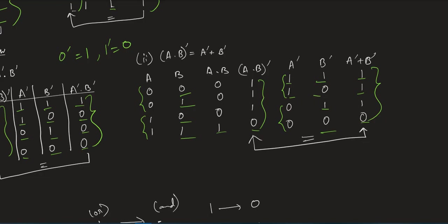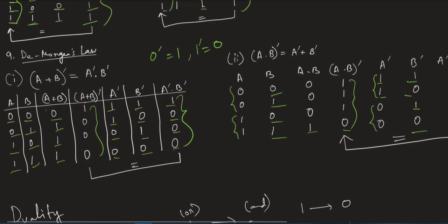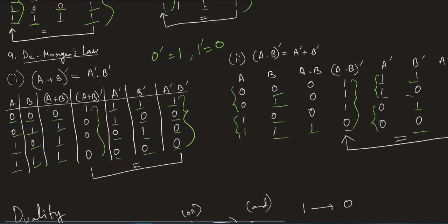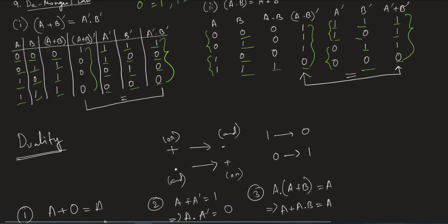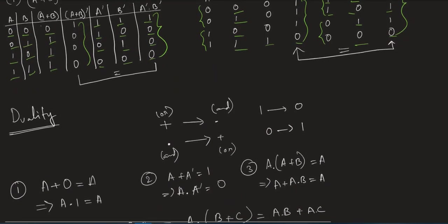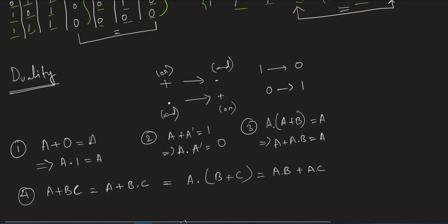The contents of A complement plus B complement are the same as (A into B) whole complement, so we can state that (A·B)' equals A' plus B'. These are the two De Morgan's laws. Now, duality — a very important topic. In duality, we convert the signs and numbers: plus becomes multiply, multiply becomes plus, 1 becomes 0, and 0 becomes 1.